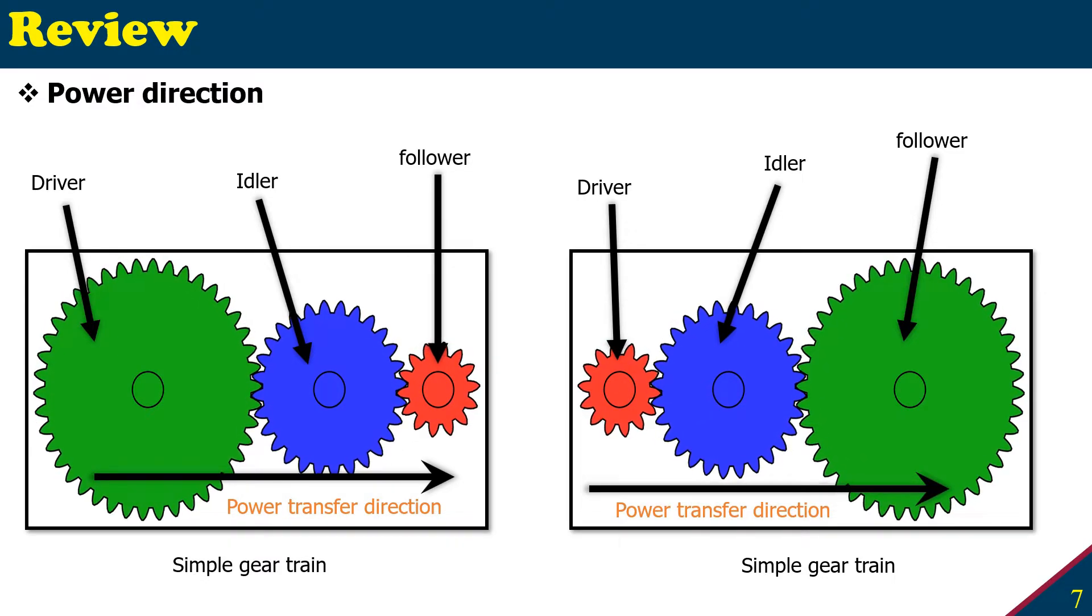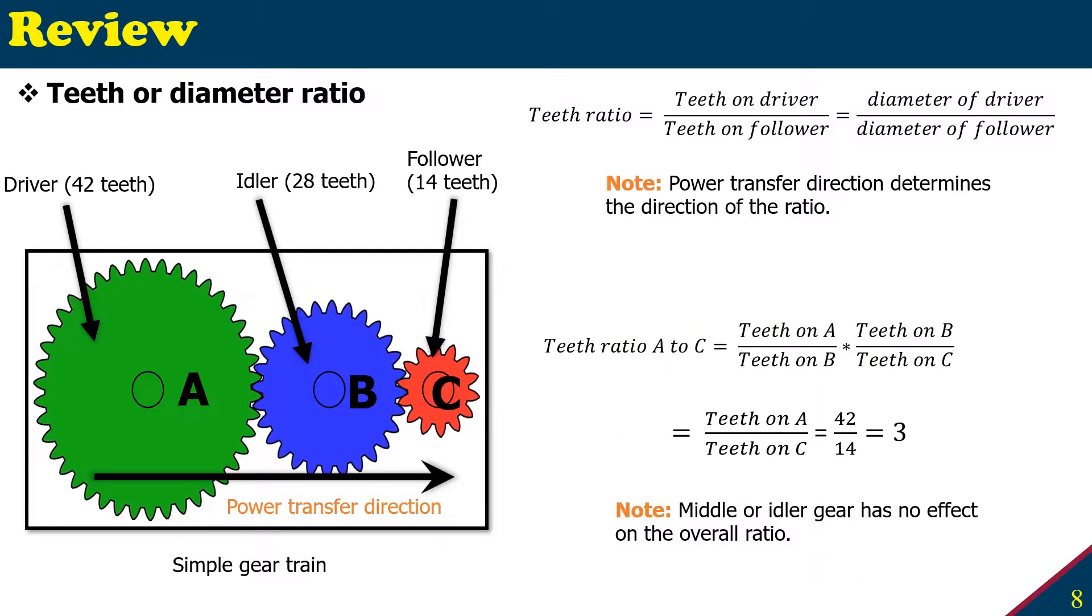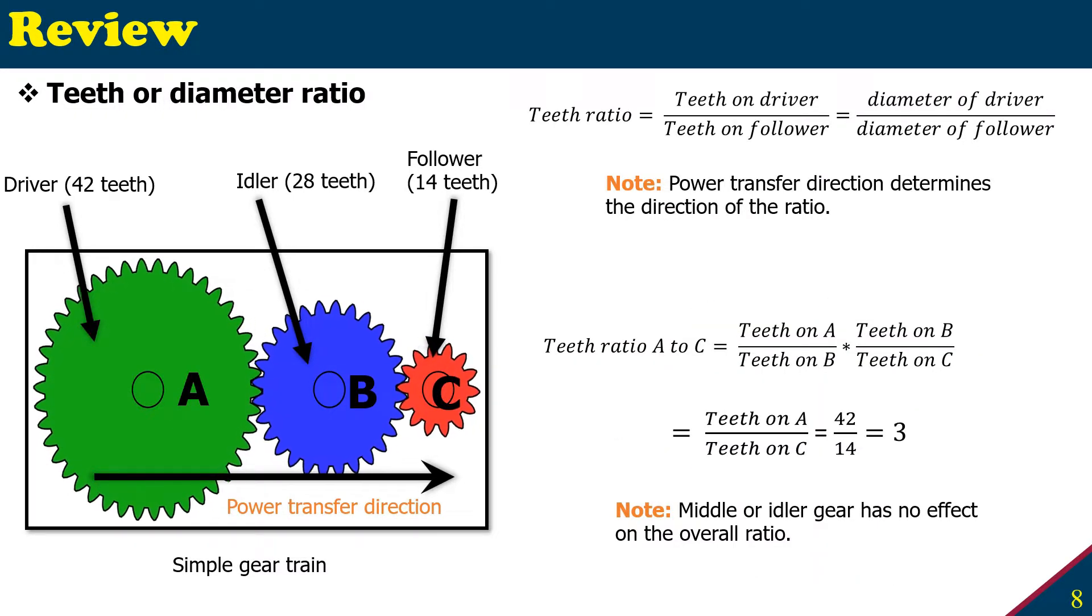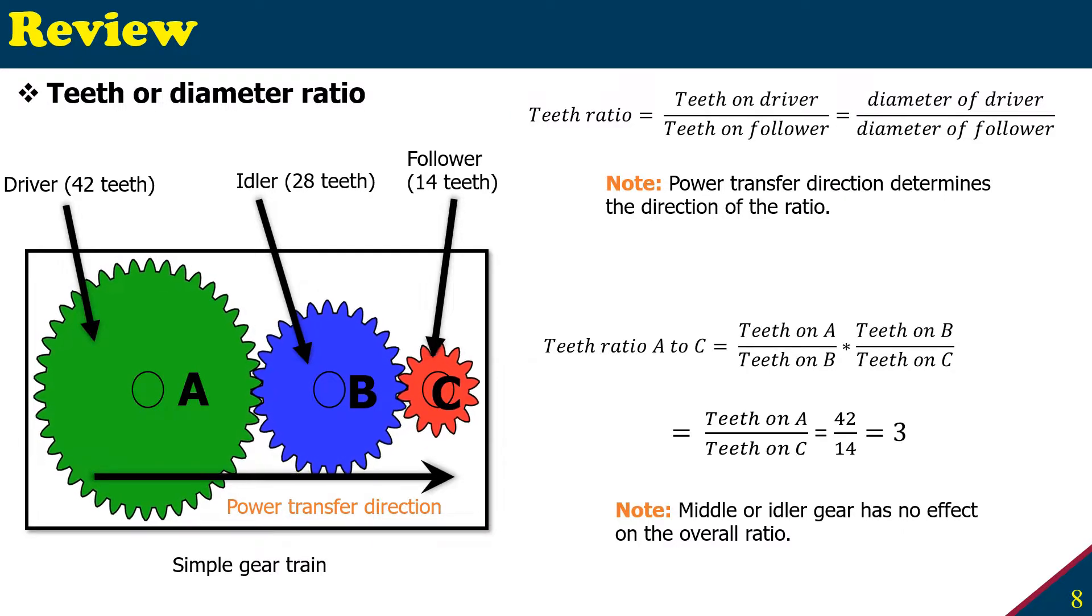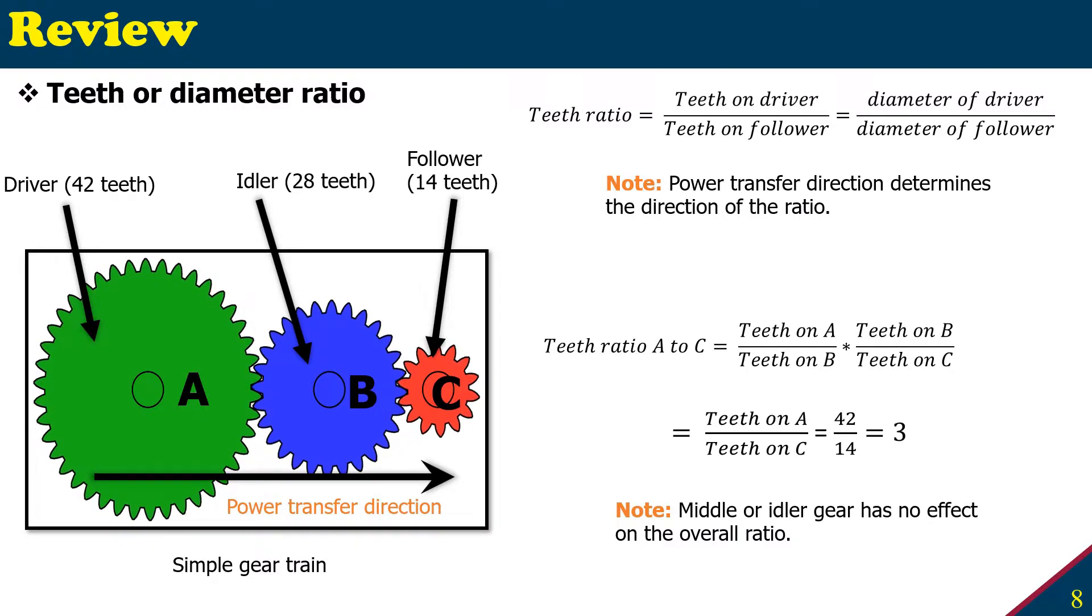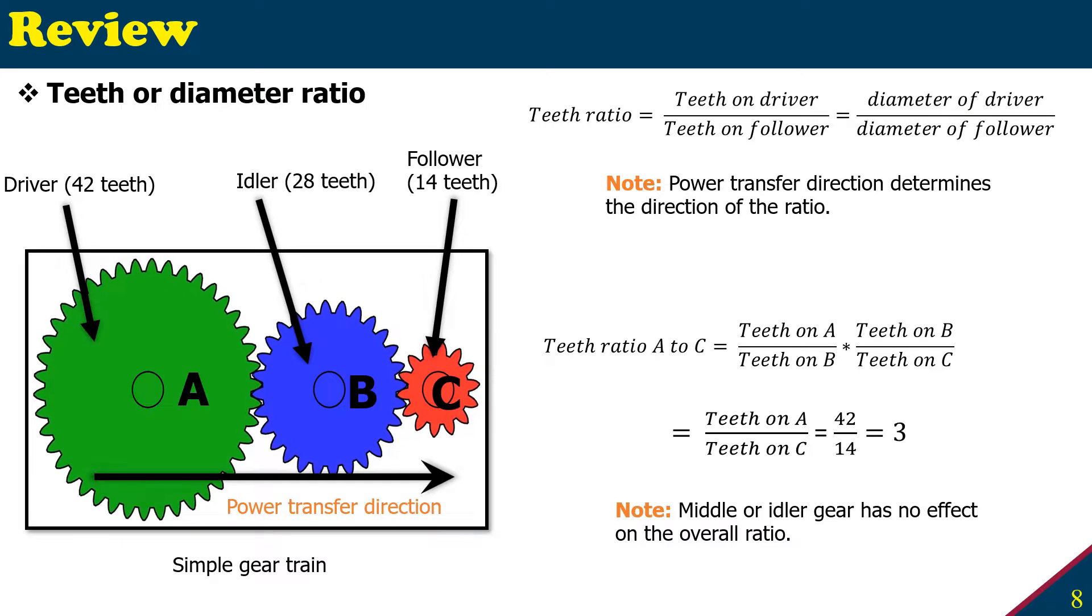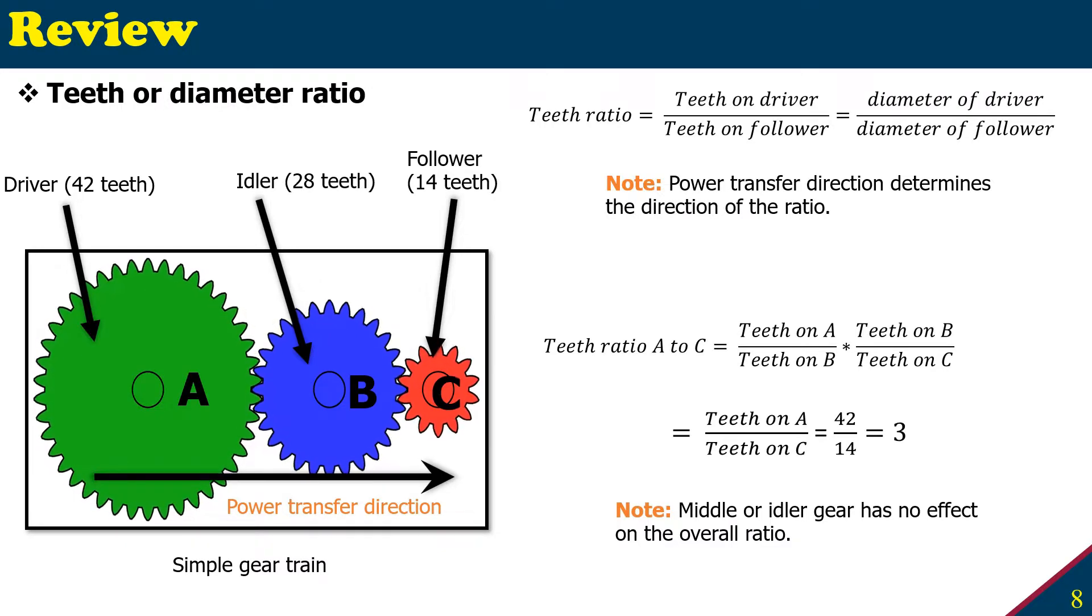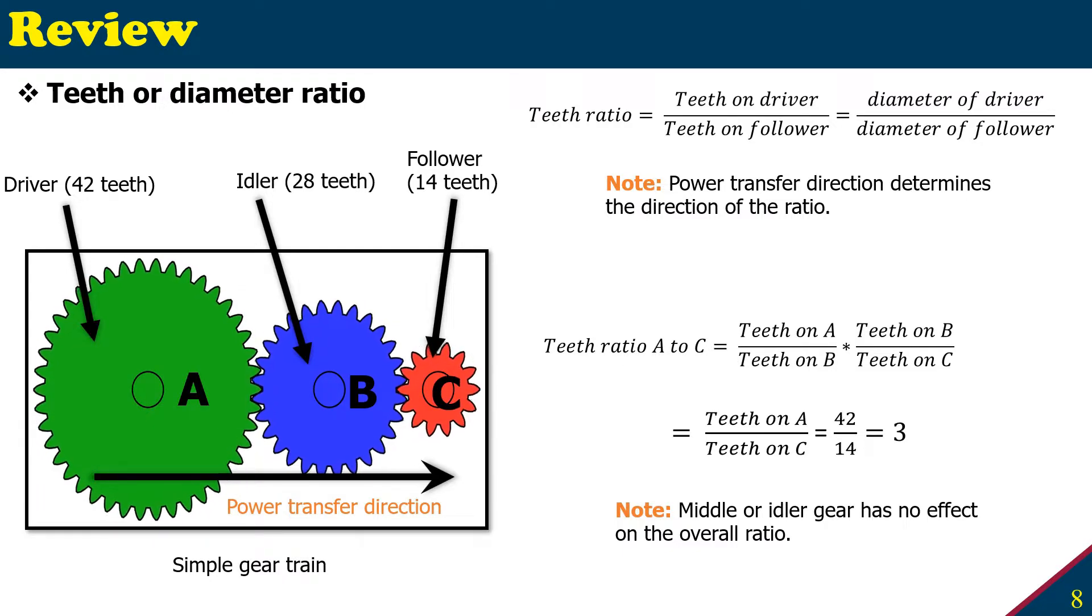Now we will learn how to determine the teeth or diameter ratio. The teeth ratio is the ratio of the teeth on the driver over teeth on the follower. It is also the same if you take the ratio of the diameter of the driver over the diameter of the follower.